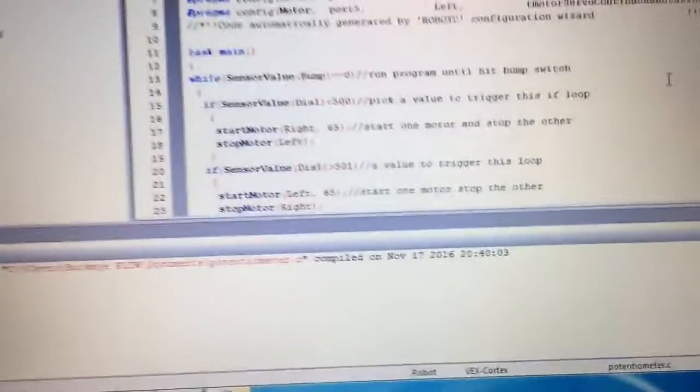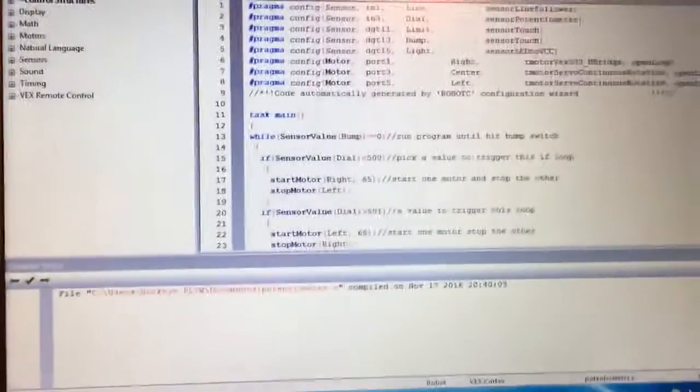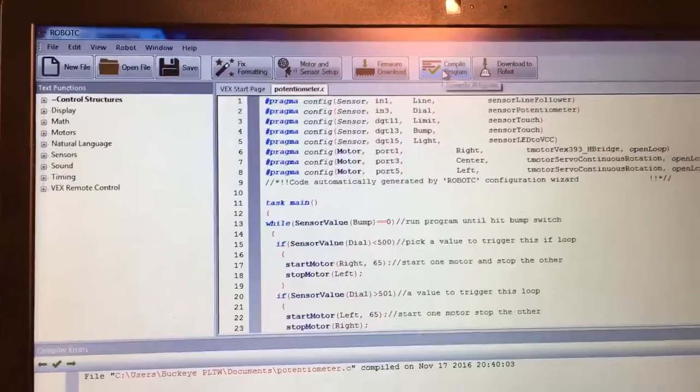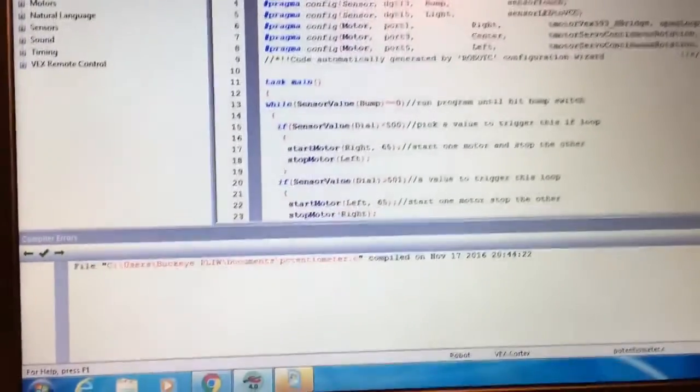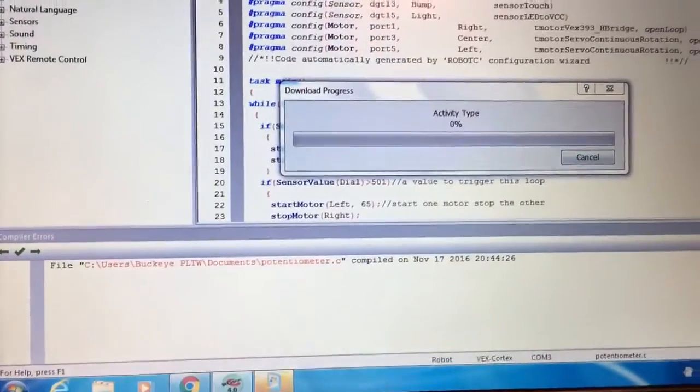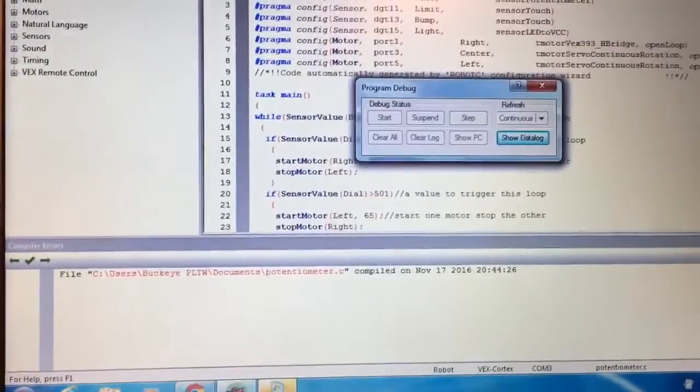As always, hit the compile code program button. Nothing popped up, so download to robot. I have actually already done that, but just going through the steps.